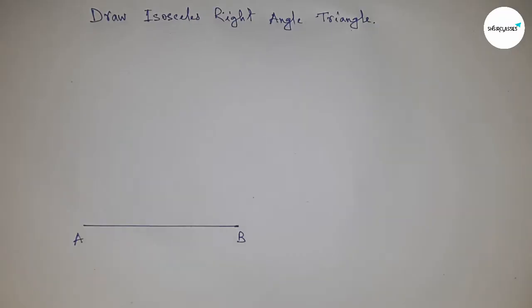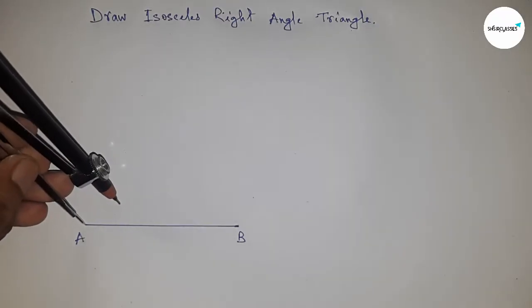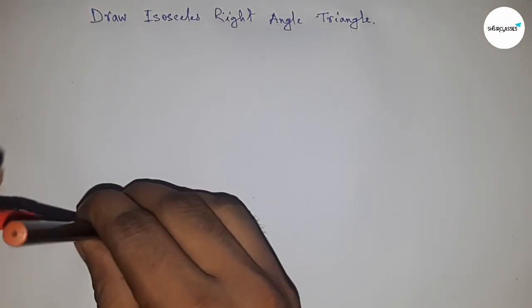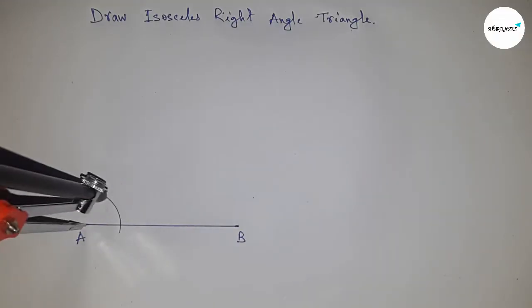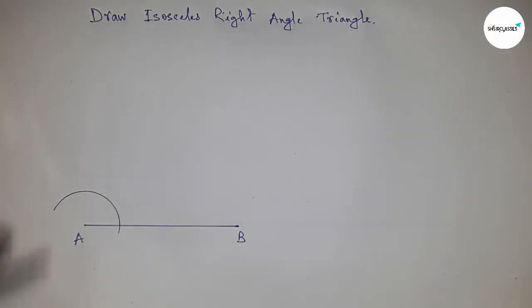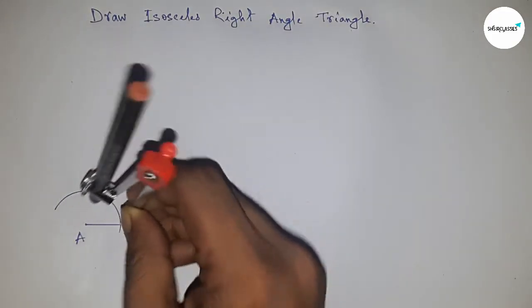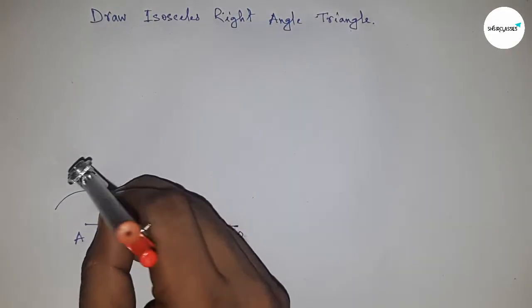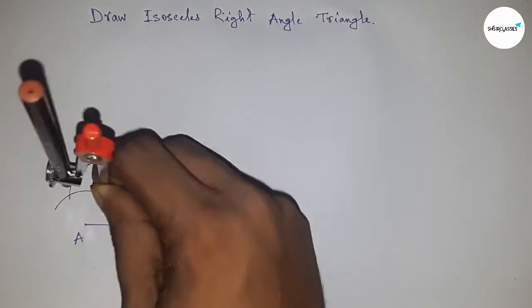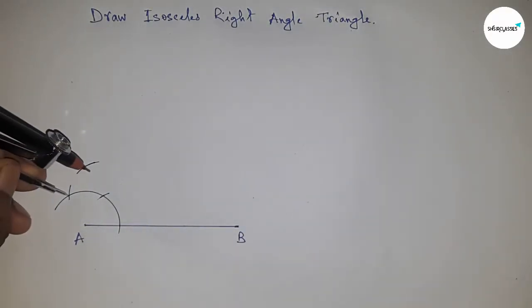Having to construct 90 degree angle on the point A. So putting the compass on the point A and taking any measure and drawing an arc by this way. Next putting the compass here and taking same length and cut here. Putting the compass here and drawing an arc here and cut here, and with same length putting the compass here and cut here.